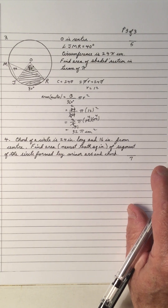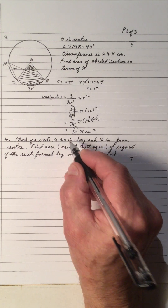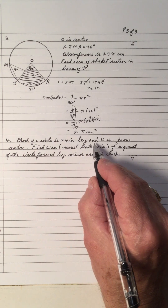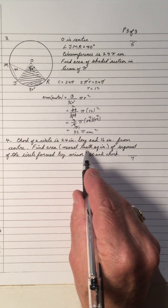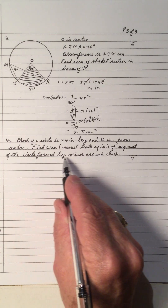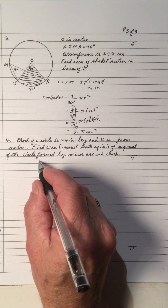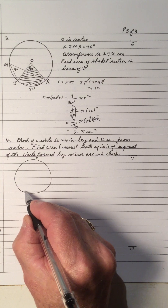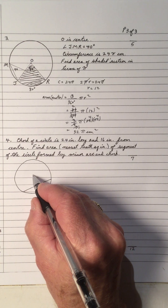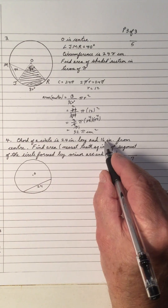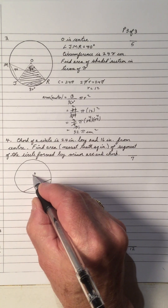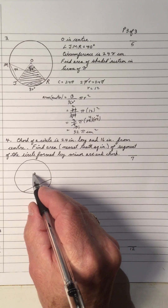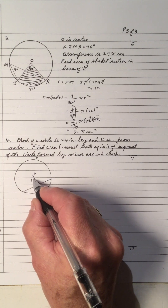Number 4: A chord of a circle is 24 inches long and 16 inches from the center. Find the area to the nearest tenth of a square inch of the segment formed by the minor arc and the chord. Let's draw a diagram. The chord is 24 inches long. The center is here, and the 16 inches refers to the perpendicular distance from the center to the chord — that's the shortest distance.